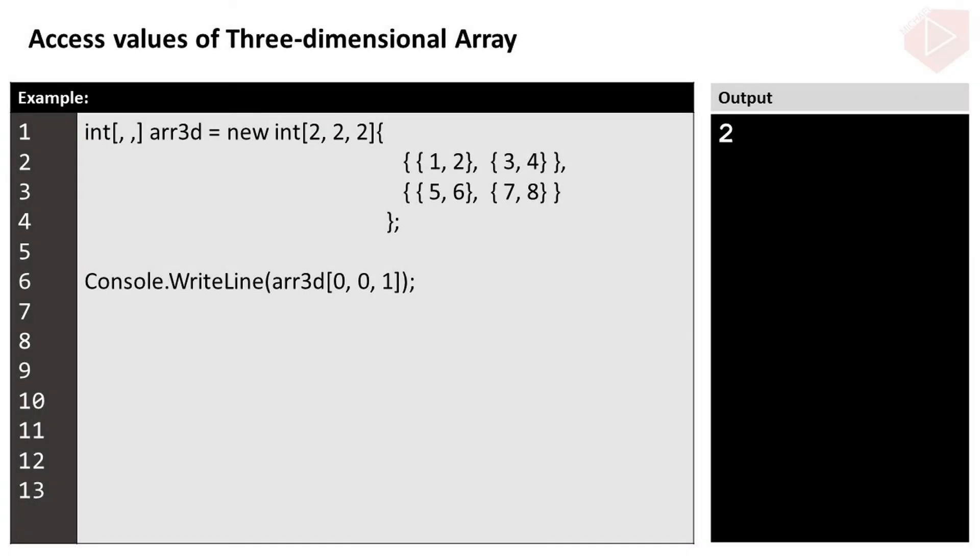Now, let's understand the three-dimensional array. The following declares and initializes three-dimensional arrays. Now if we want to get 2 in the array, we need to know its particular position in the array.